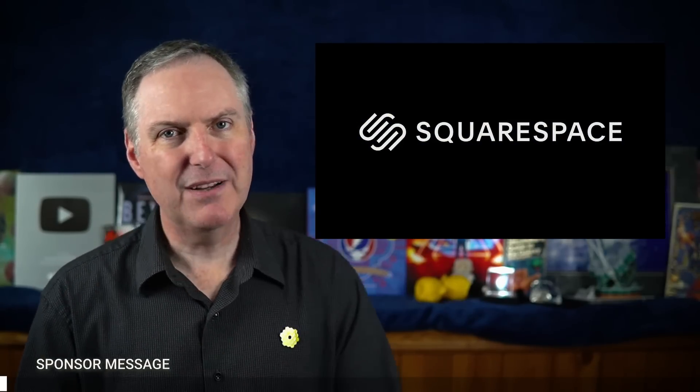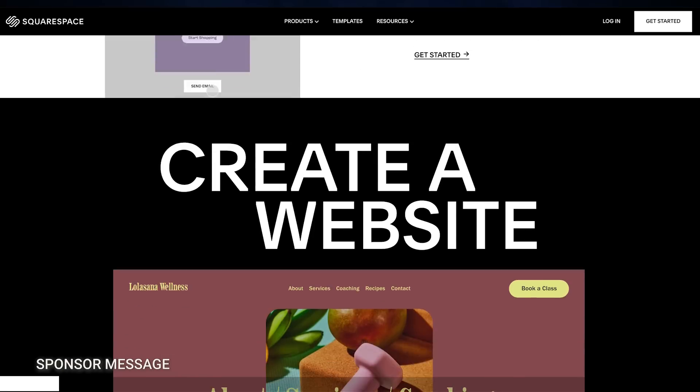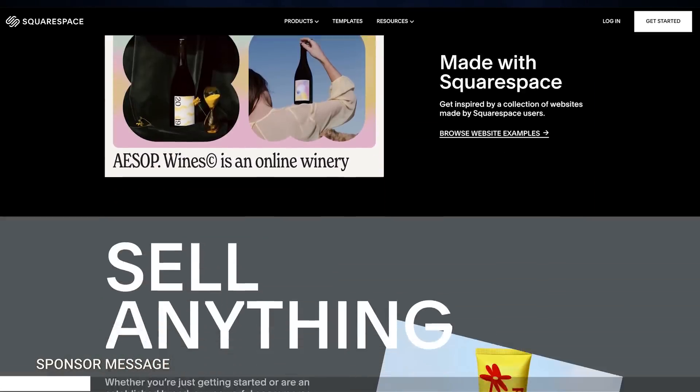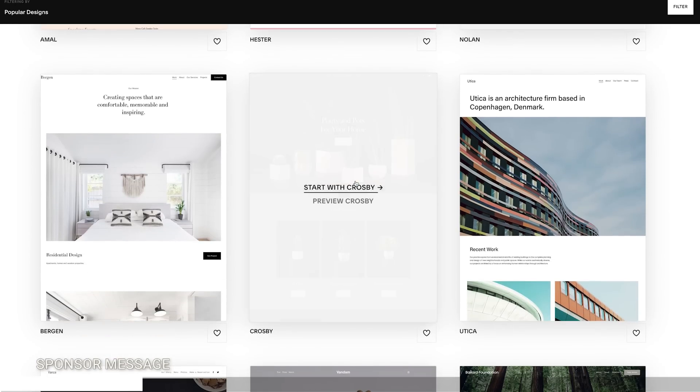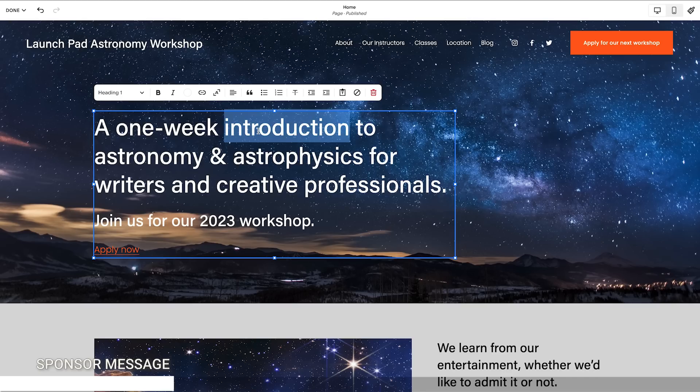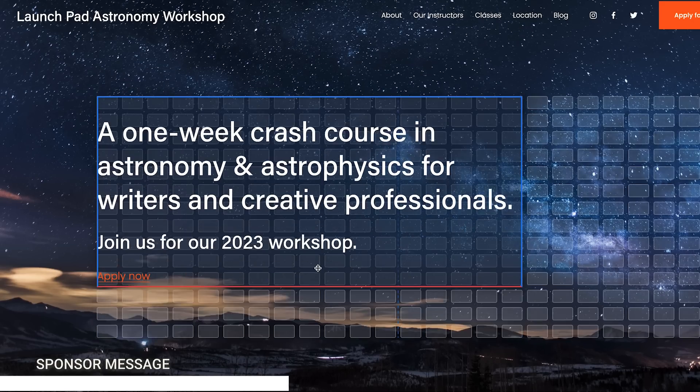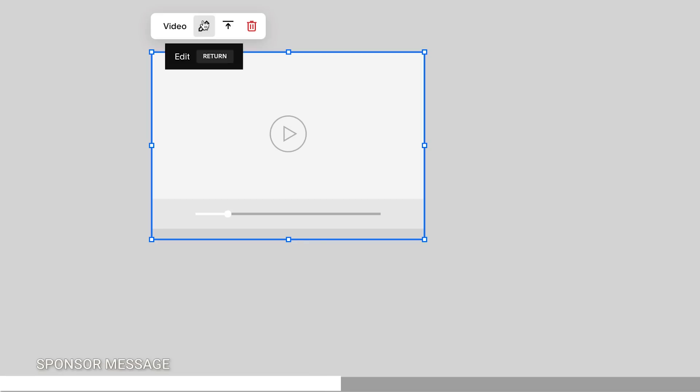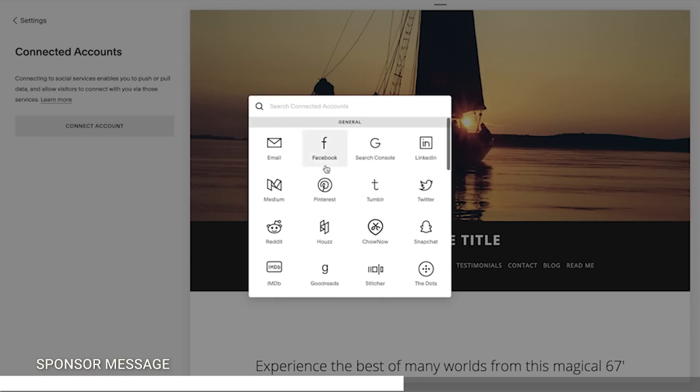Squarespace is designed to give you everything you need to get a new website up and running without having to write a single line of code. To get started, simply choose from one of the many mobile responsive templates and use their suite of built-in tools to upload your content. I'm building a new site for our annual workshop for writers, and it's amazing just how easy and intuitive it is. With its new Fluid Engine, I can move and resize elements and know they'll always line up with the overall layout of the site. You can add any type of content, whether it's photos, videos, newsletter signups, e-commerce, or virtually anything else you can imagine.